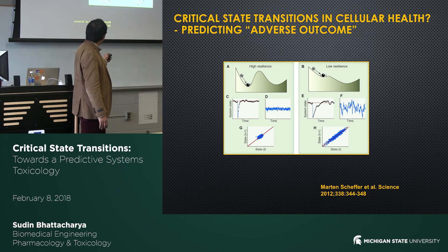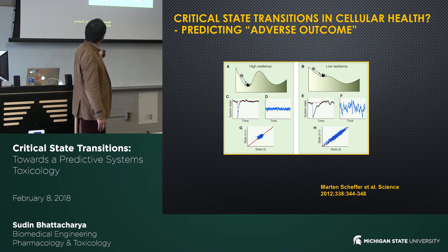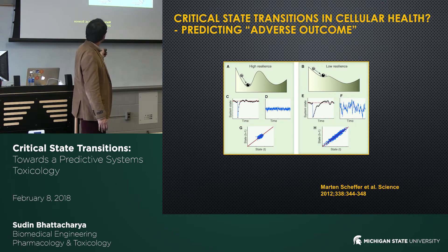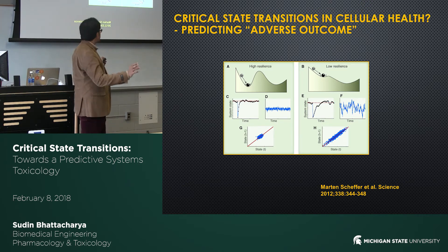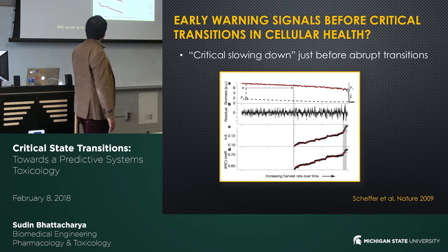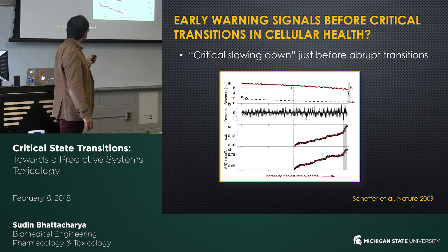But before the transition, as the external perturbation makes the first valley more and more shallow, the cell can oscillate more and more in this original valley. Because of the shallowness, if you push the cell, it will return to its original steady state much more slowly. There's much more room for noisy oscillations in the original valley. This basic idea is often described as 'critical slowing down,' the term that Scheffer used in the Nature paper.